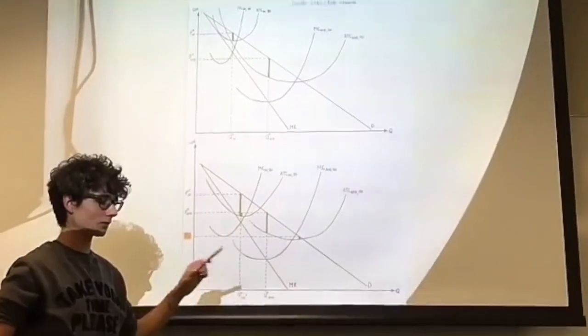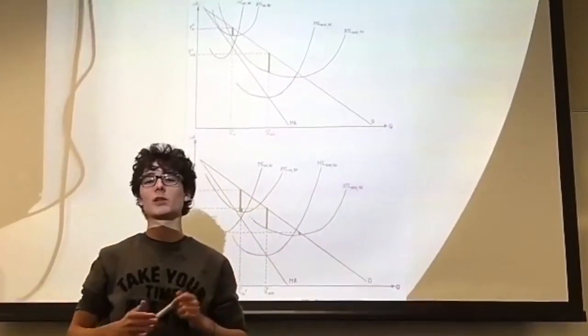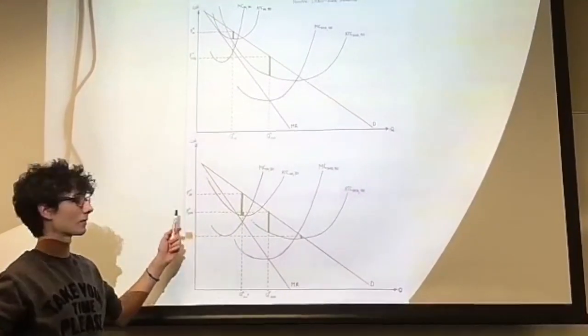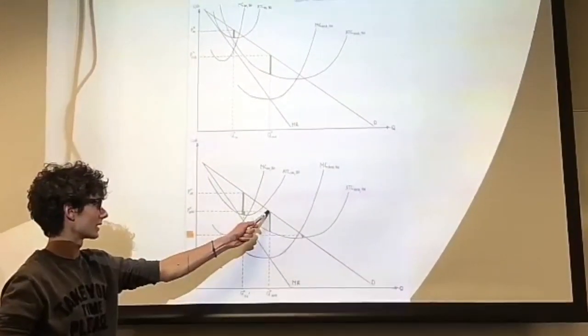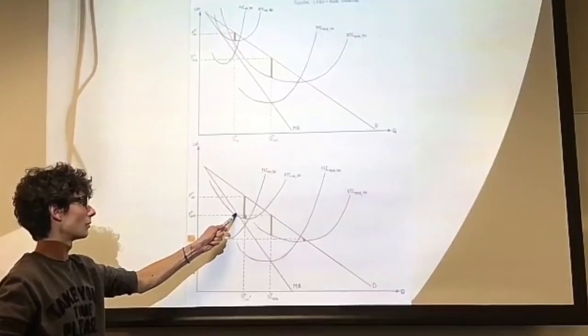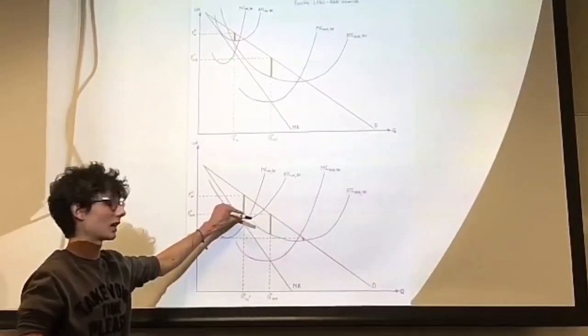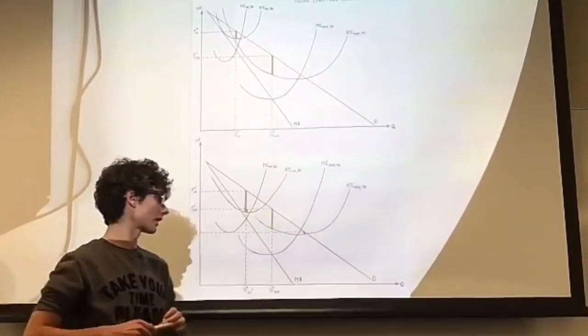However, in this one, the incumbent firms have optimized their costs enough. So if Amazon chooses the profit-maximizing level of price, it is still a bit above the ATC of the incumbent firms, so they can still make a profit and continue operating in the market.